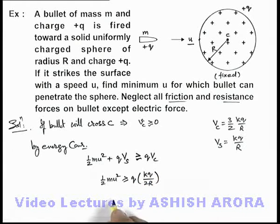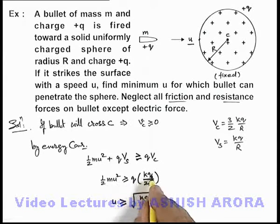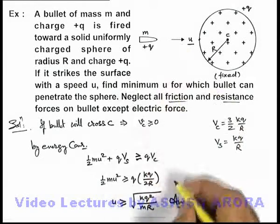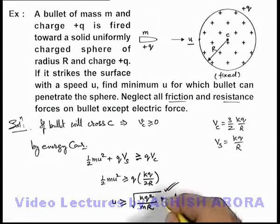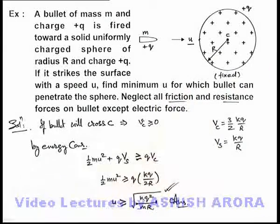In this situation, the speed u must be greater than or equal to the square root of kq²/mR. So this is the answer to this problem — the minimum speed is √(kq²/mR), and if the initial speed is more than or equal to this minimum value, the bullet will be able to penetrate the sphere.